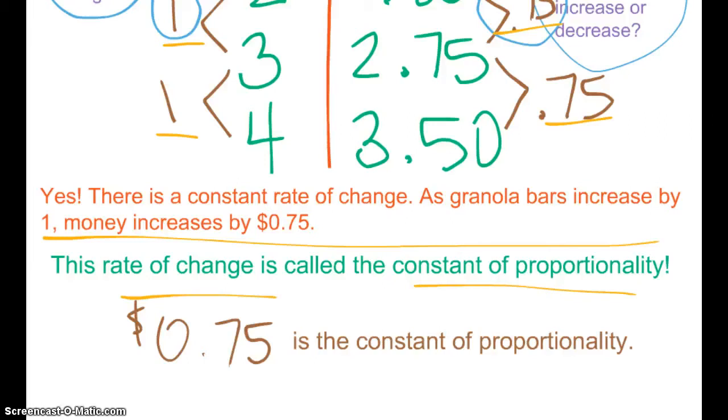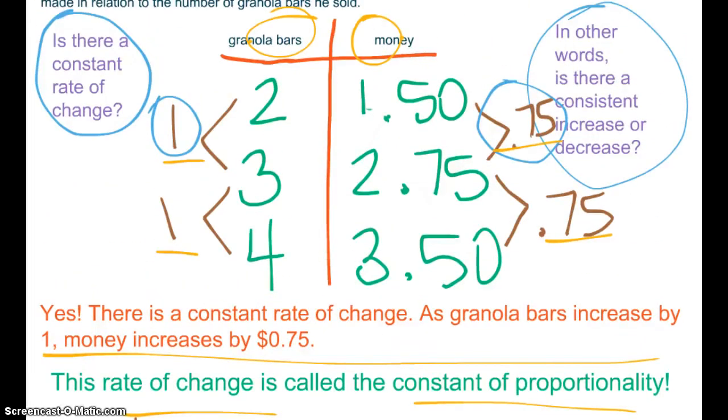One more thing that I want to point out. What do you notice about $0.75? If we were to find the unit rate or the value of one granola bar, what would that be? One granola bar is $0.75.